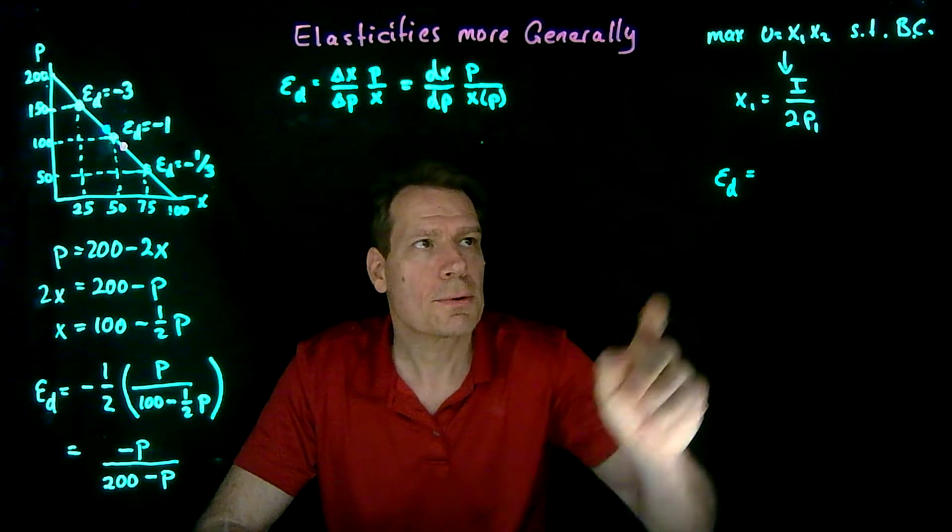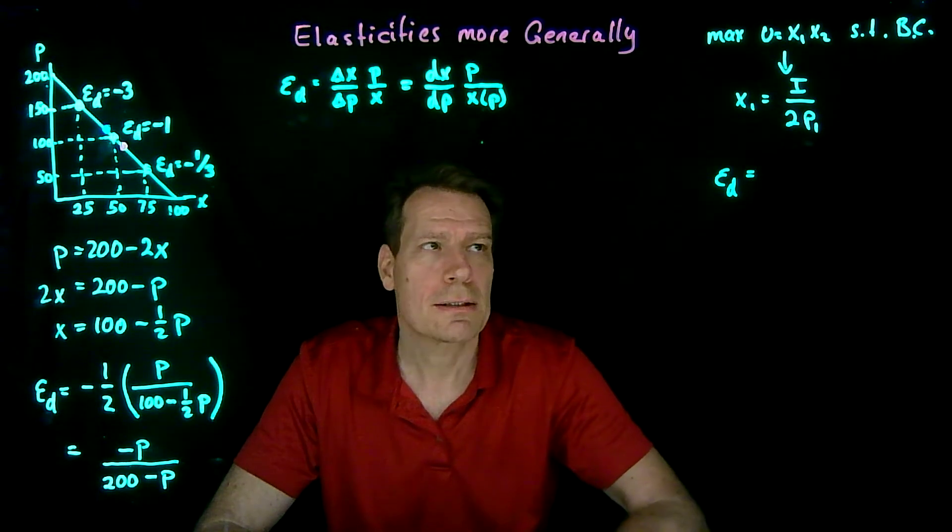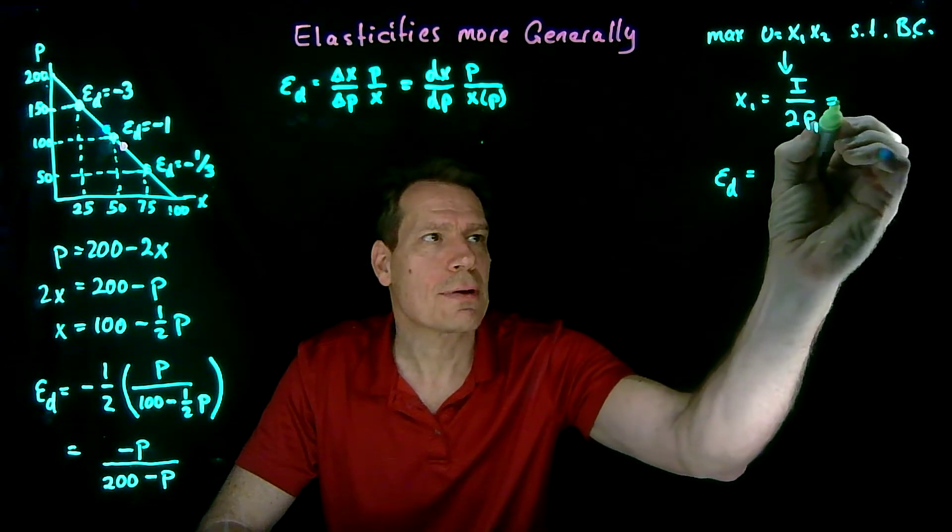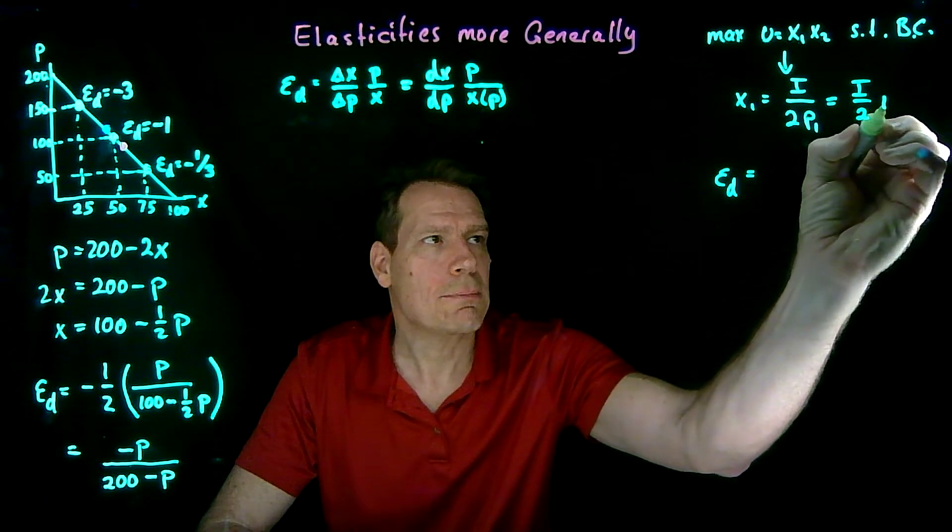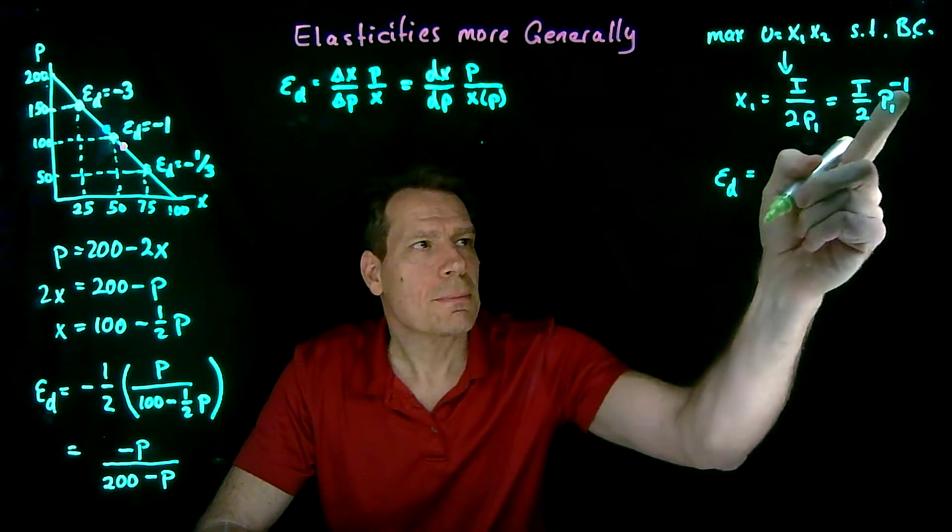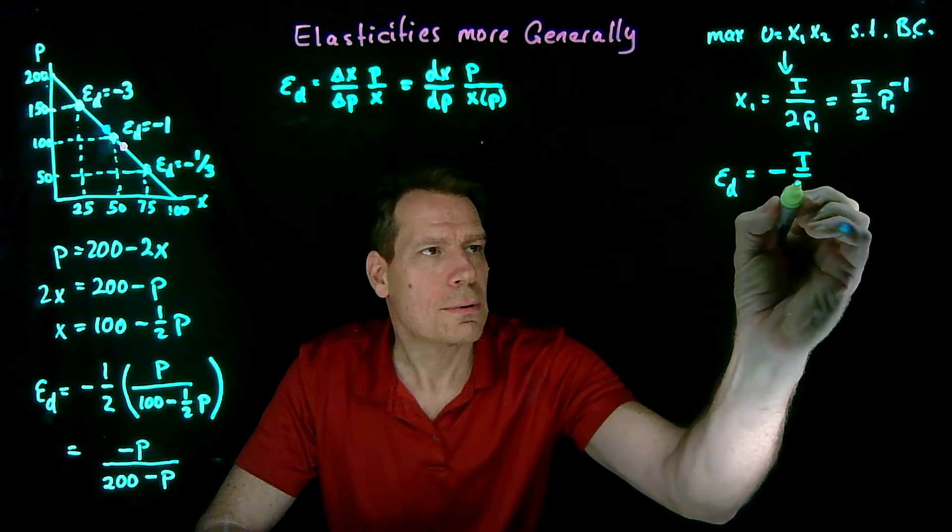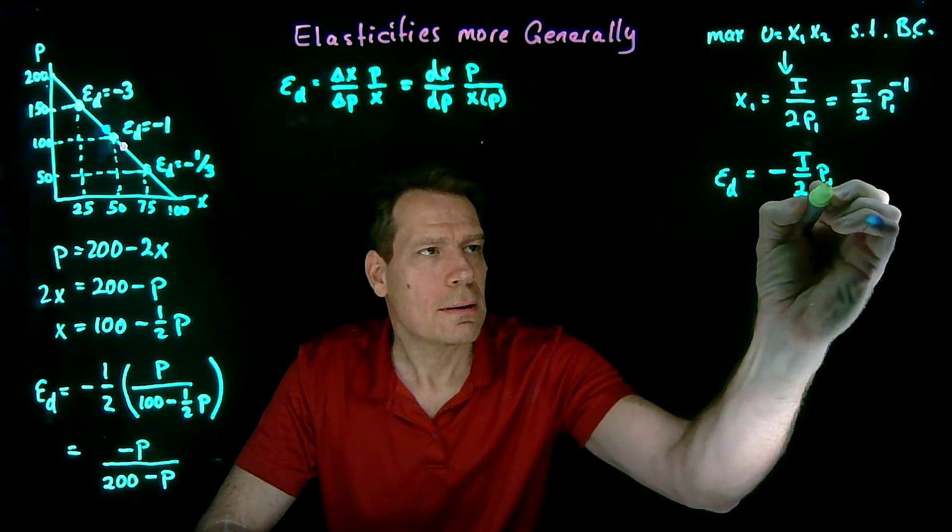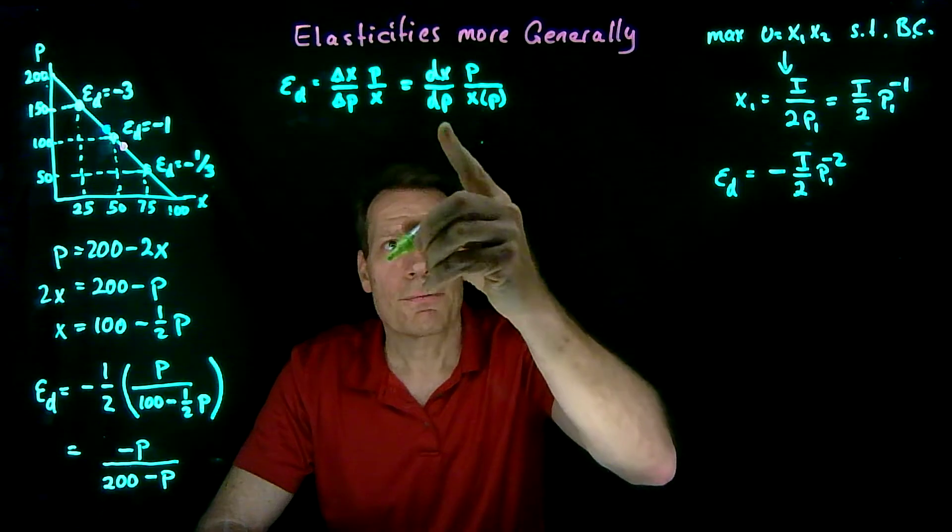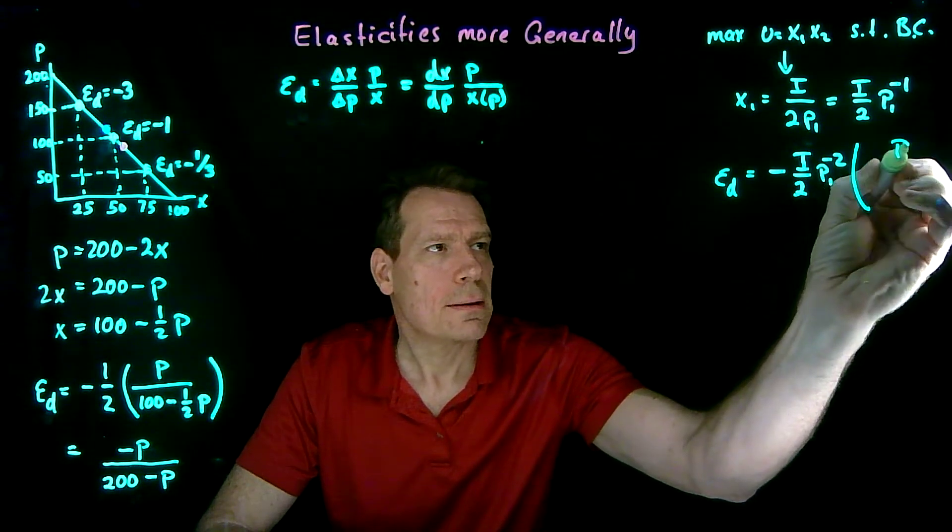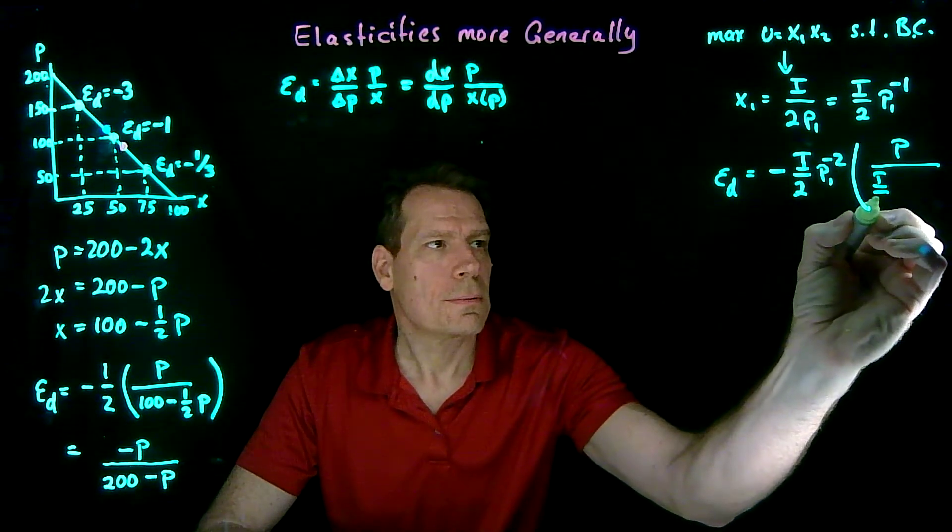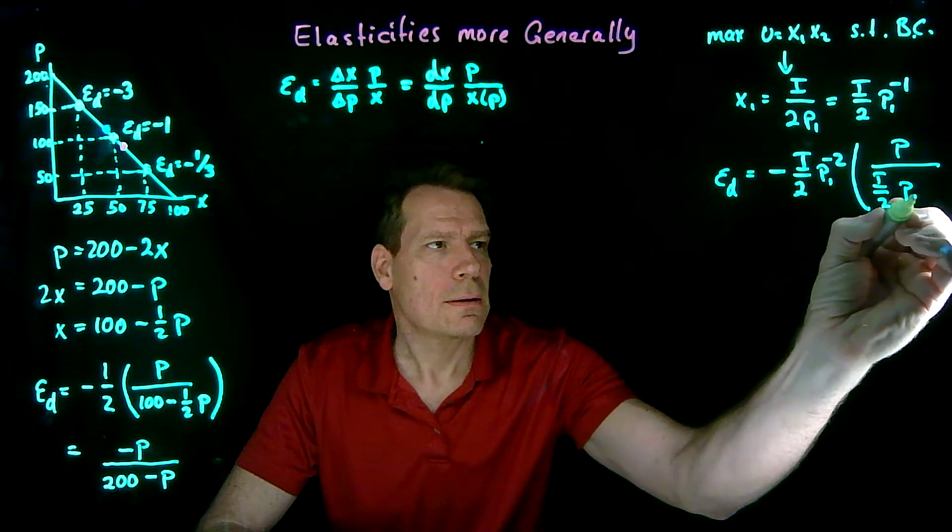The price elasticity is equal to the derivative of that with respect to the price. So I always forget the quotient rule for differentiating, so I always write everything as products. i over 2 times p1 to the minus 1. And I can apply the product rule. So it'll be minus i over 2 times p1 to the minus 2, subtract 1 from the exponent. That's the first term. That'll be multiplied by p over the demand function. i over 2 times p1 to the minus 1.